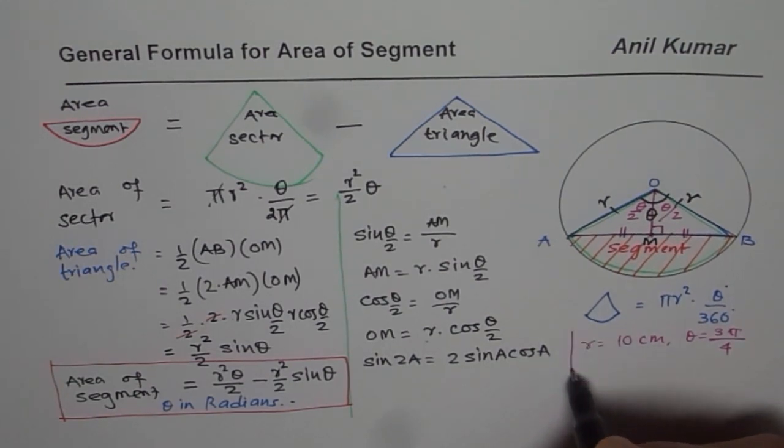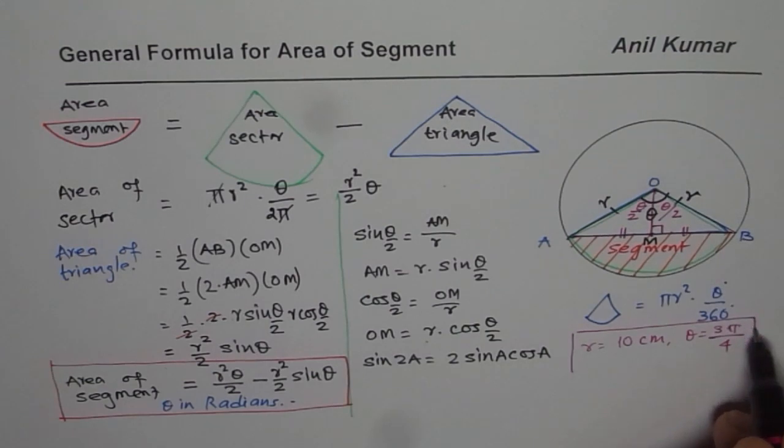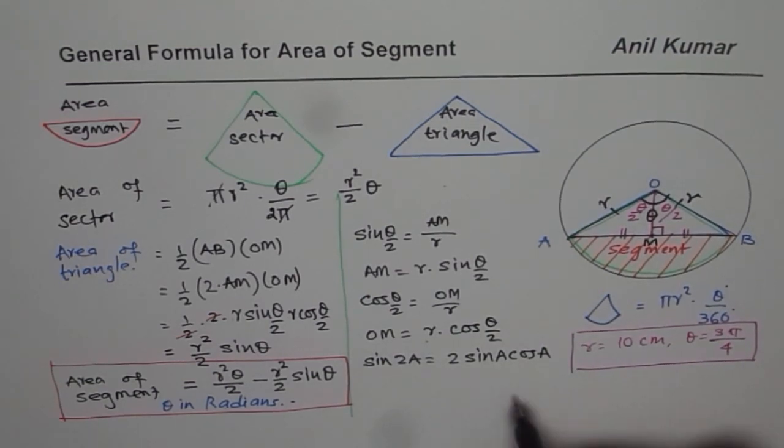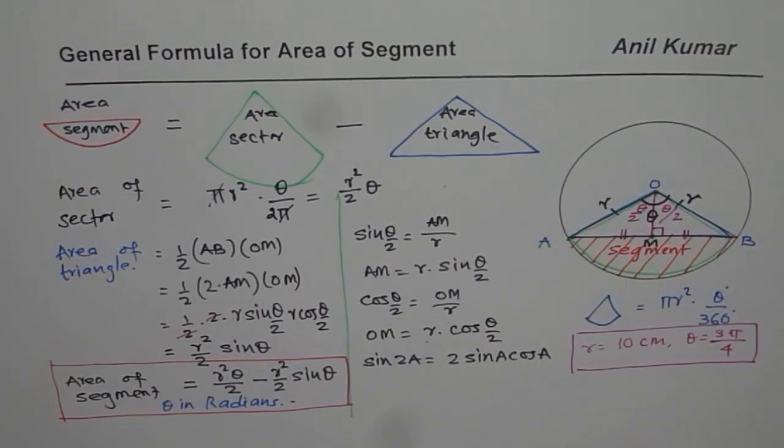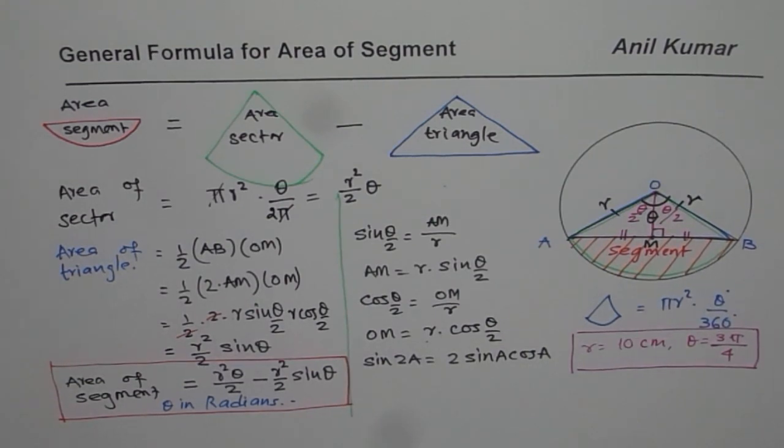So take theta as 3 pi by 4 and figure out what should be the area of the segment. So that could be a question for you to try. I have given you a link to practice question, which you can do after understanding how to get this formula. I hope that helps. Thank you.